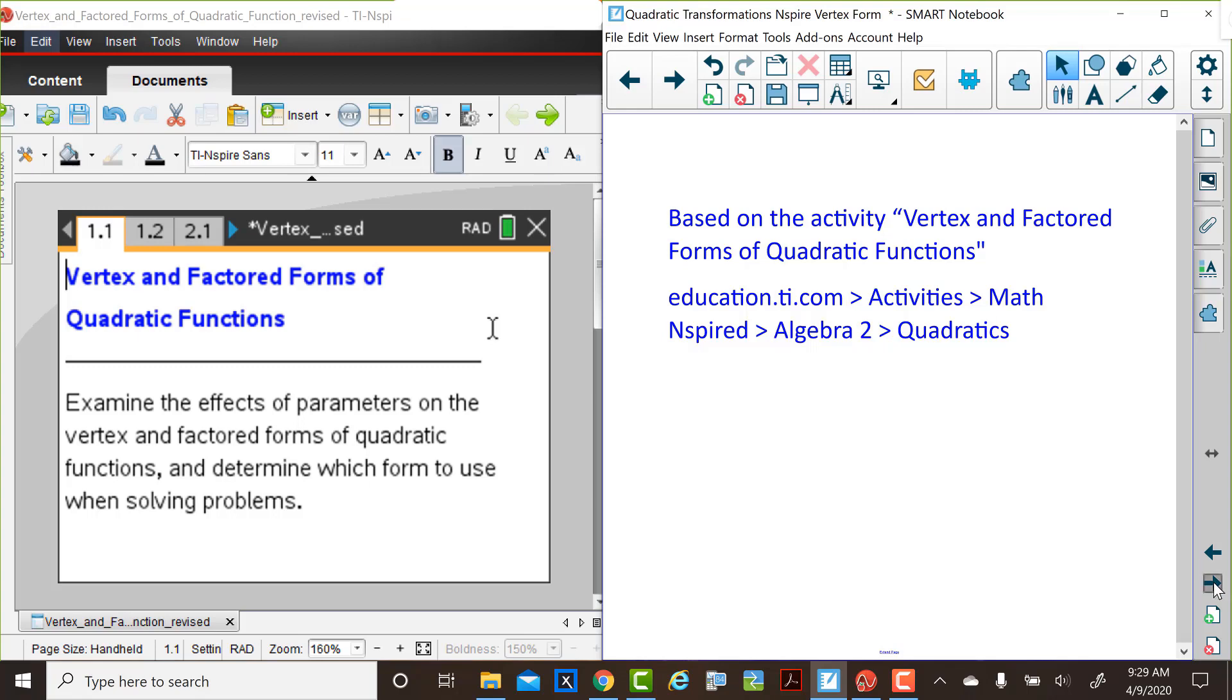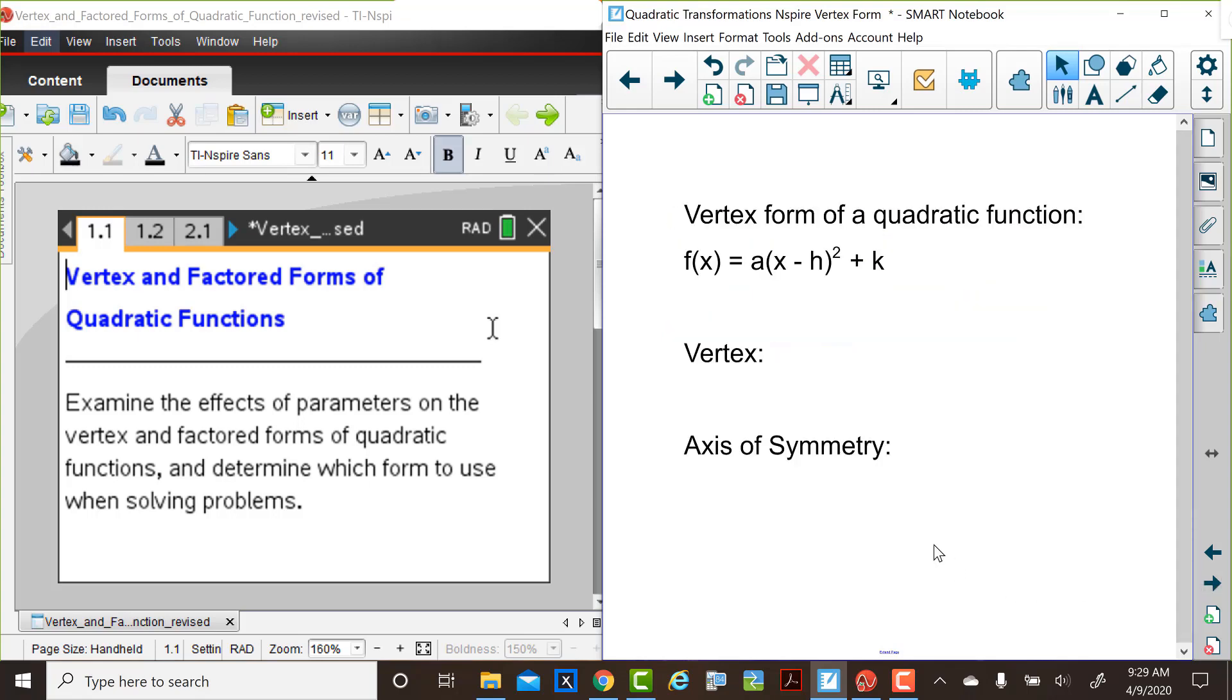First, let's review the equation of a quadratic function in vertex form: f(x) equals a multiplied by (x minus h) squared plus k, where a, h, and k are parameters.